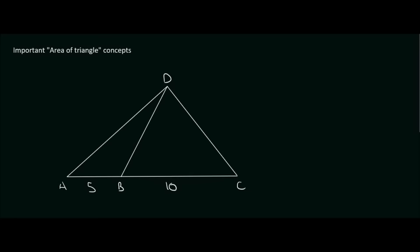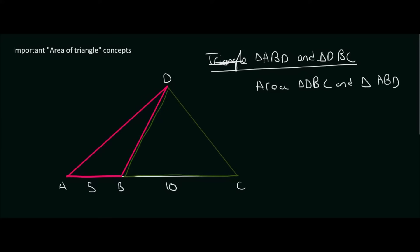If we look at these two triangles - triangle ABD and triangle DBC - and we want to know the ratio of their areas, the area of triangle DBC to triangle ABD, then we need to divide them.